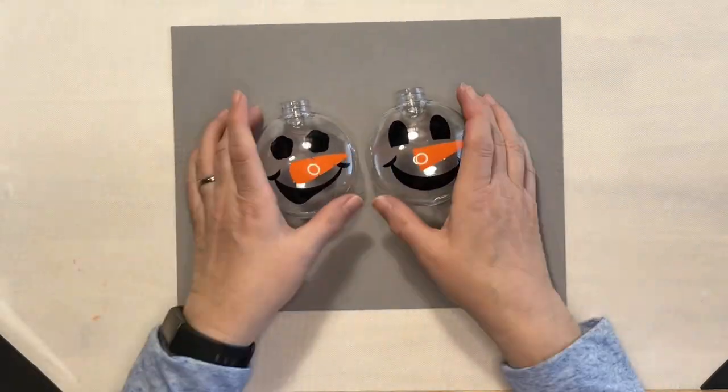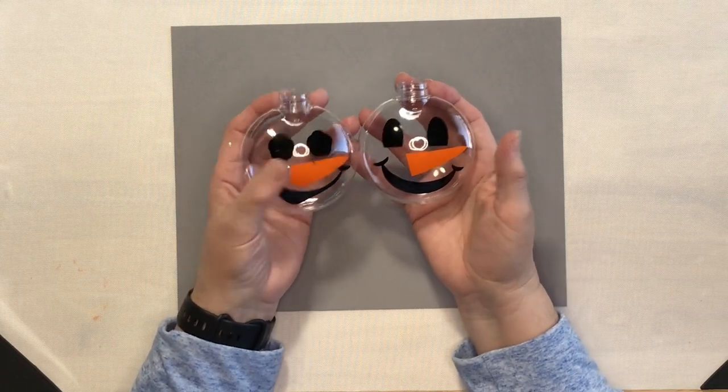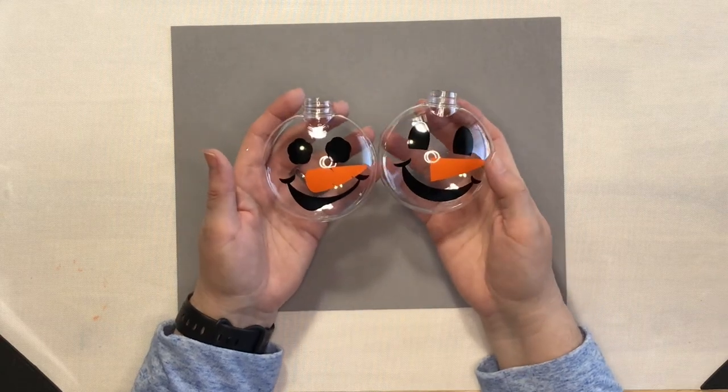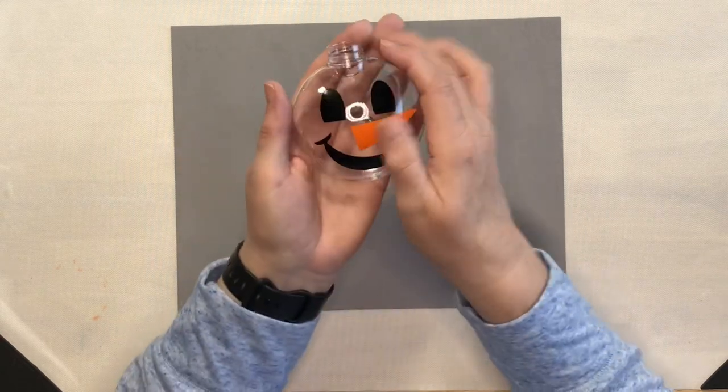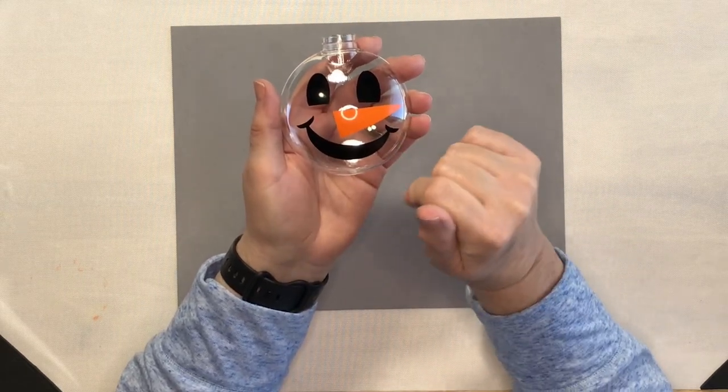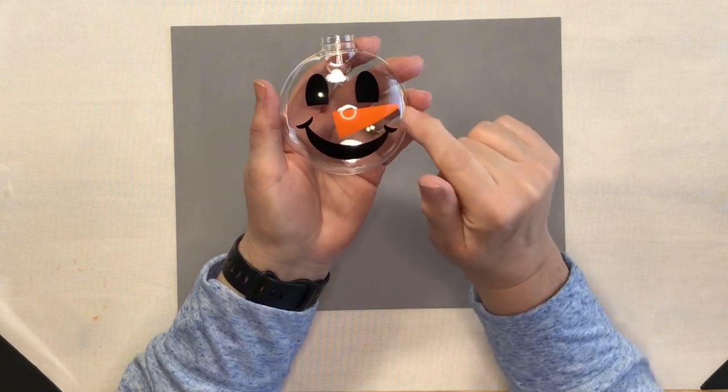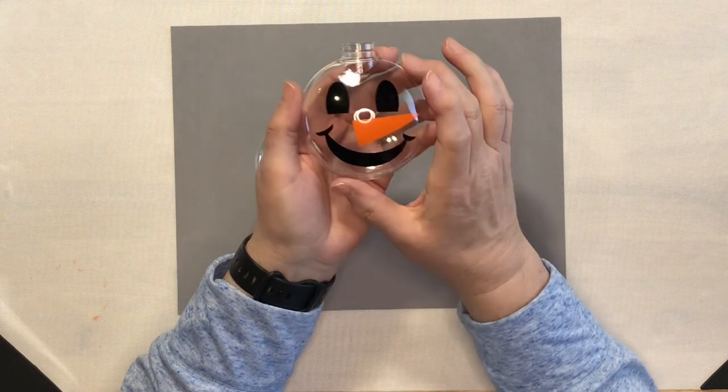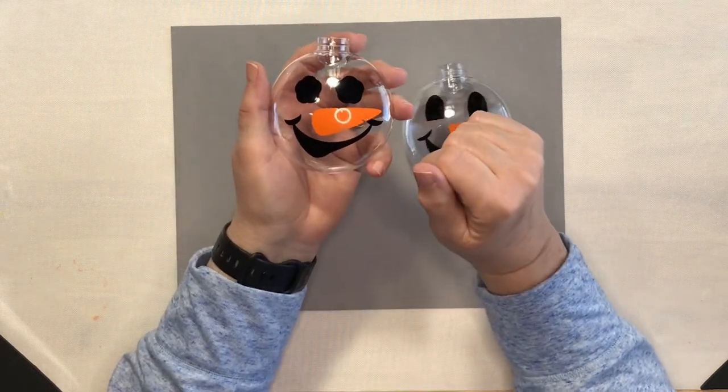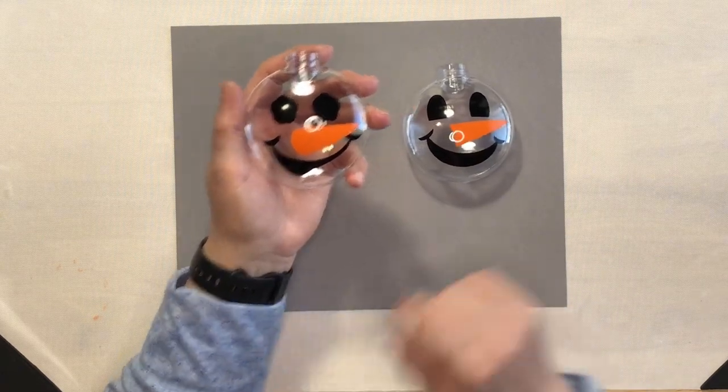All right, here are the adorable little snowman. Now, I should have done a test run on this to know exactly the best way to do it. As you saw in the sped up version of this second one, I did cut the face apart. I put the eyes on first and then the nose so it would fit and then I put the mouth on. I wish I'd have known that for this one, but you know what? I still think it is absolutely adorable just the way it is.